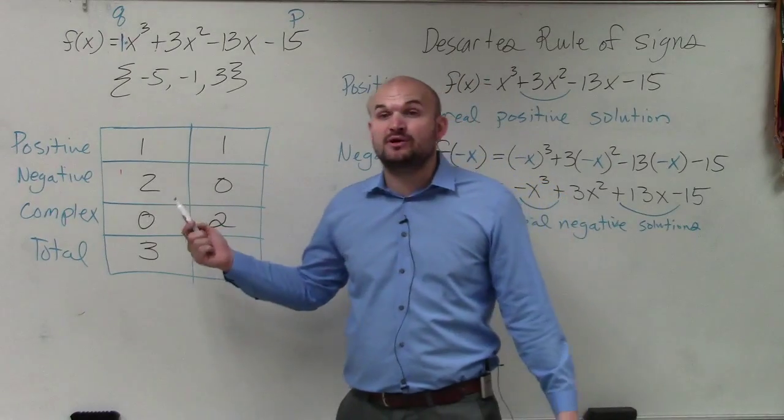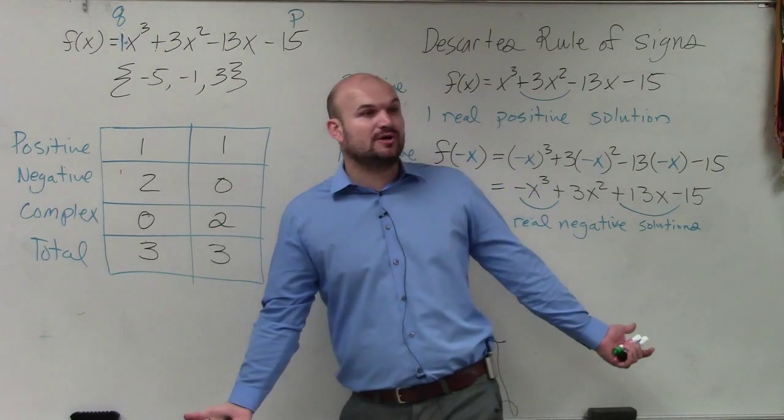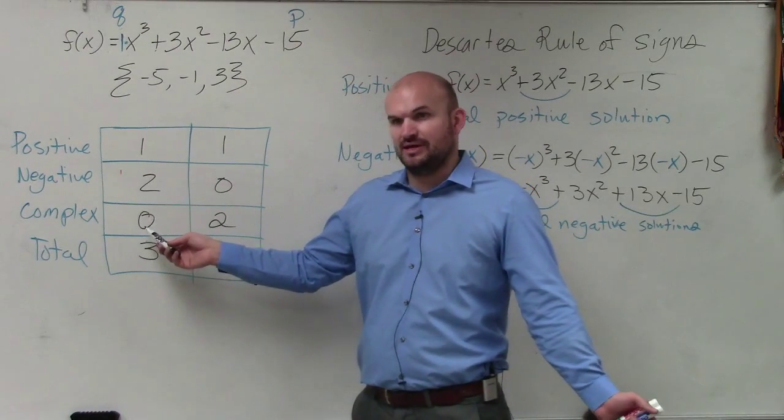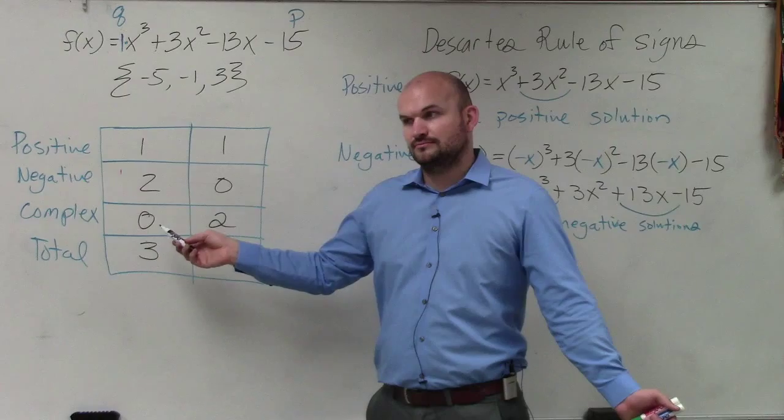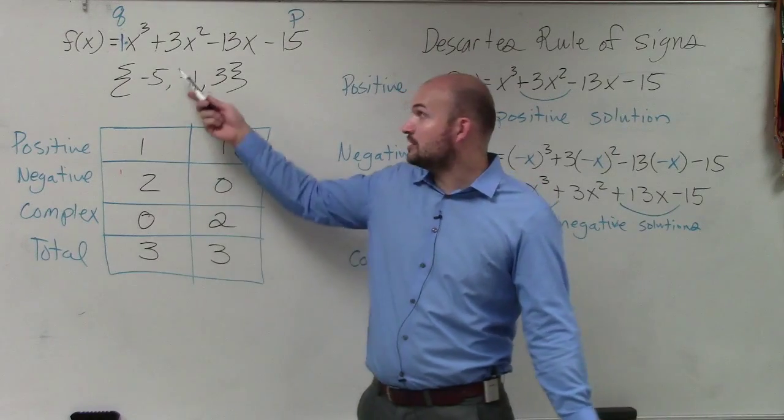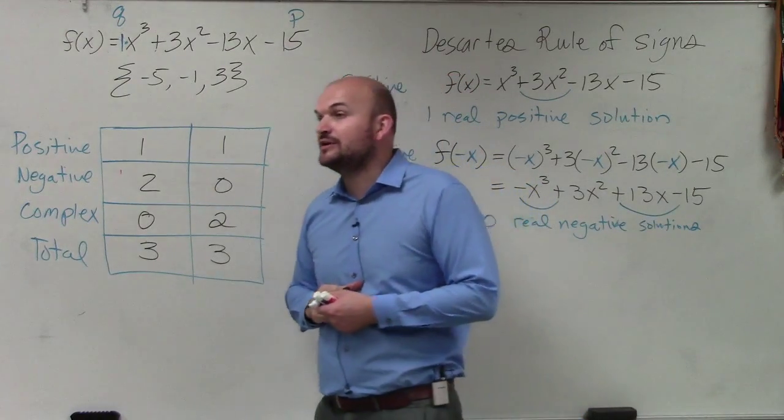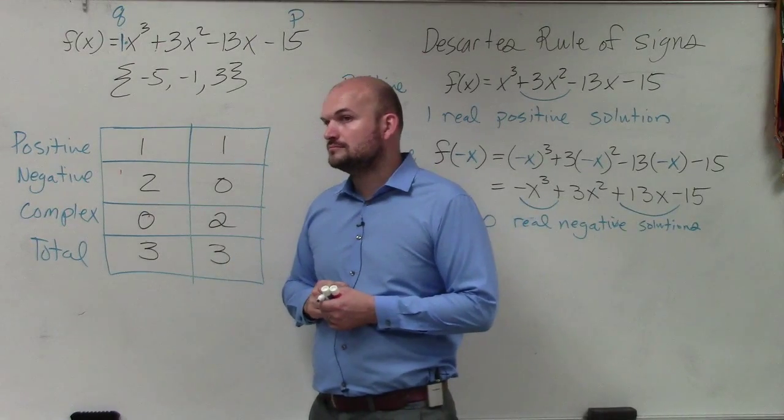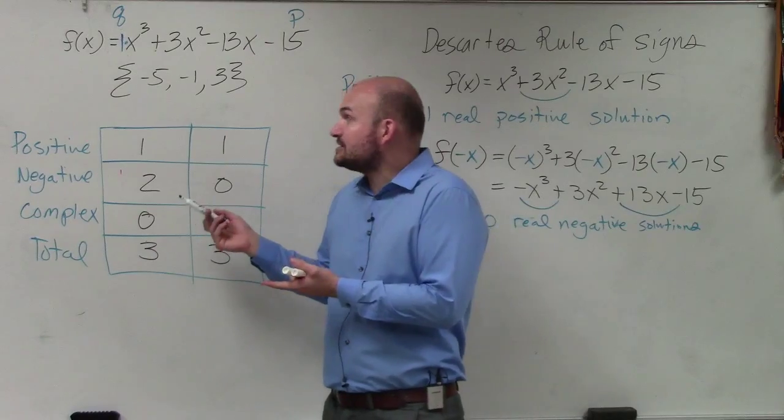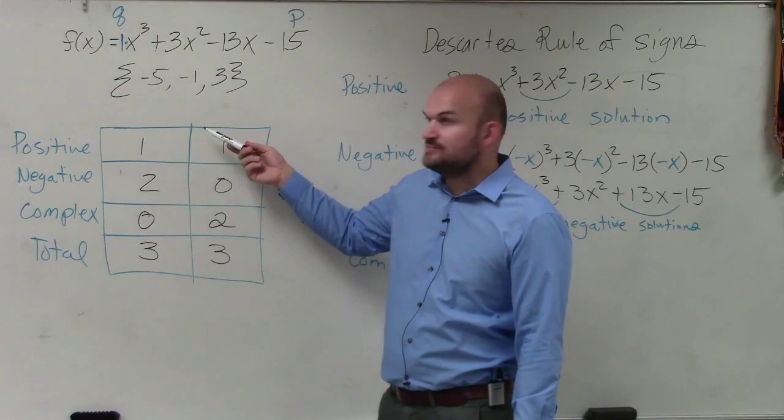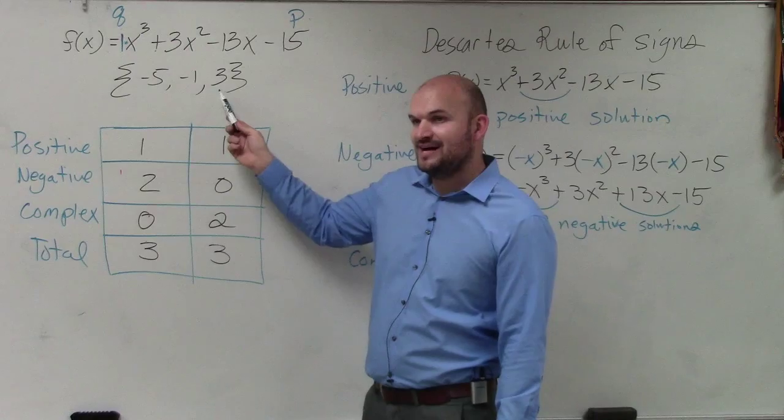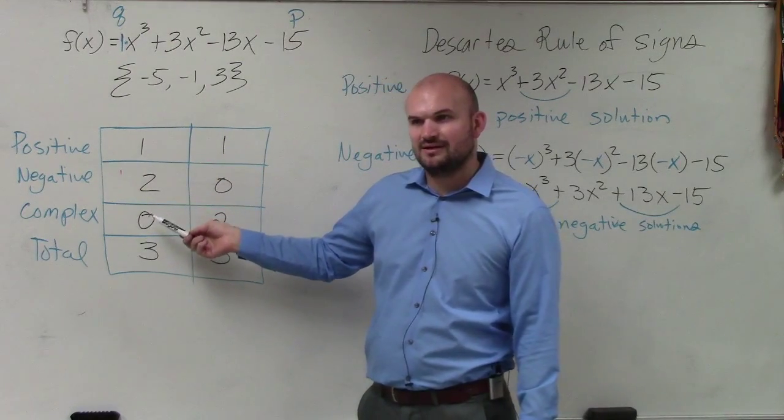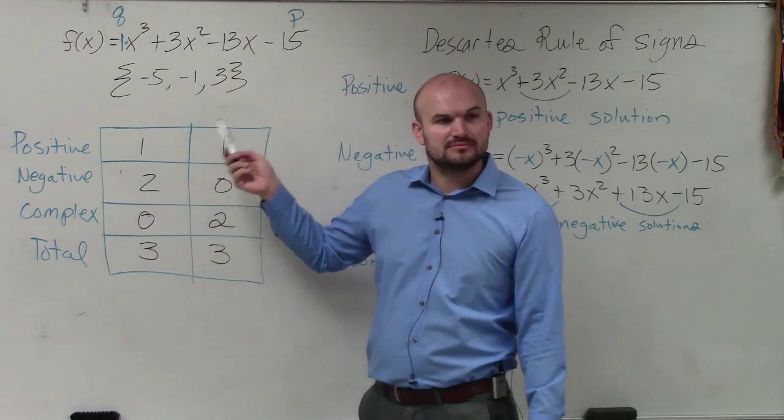And so basically, if I asked you on your test, what is the number of possible complex, you would say there's either 2 complex or there's 0 complex numbers. Well, as long as the degree is 3. If the degree is 5, you'd have to have a total of 5. Right? Yeah. And let's look at our answer. Does our answer actually follow one of these columns? One positive, two negative. One positive, two negative. Zero complex. That works. Cool.